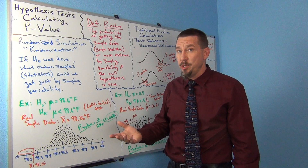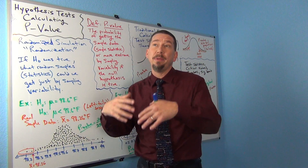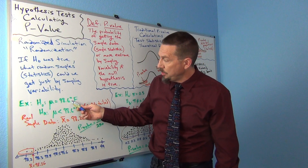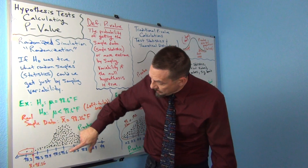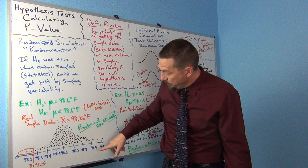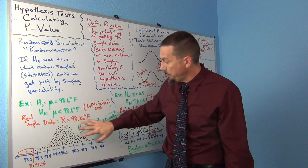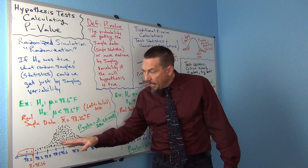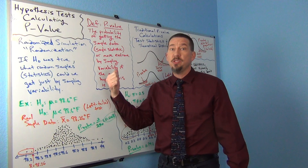Remember when we learned about sampling distributions before — the center is usually the population value. In this case, that's the population value you're assuming in the null hypothesis. So our assumed population mean of 98.6 is the center of the distribution. But I can see that even though the center is 98.6, I've got simulated sample means ranging anywhere from about 98.2 to 98.9. So there's lots of sampling variability here, and this graph shows what we expect to see by sampling variability if the null hypothesis was true.